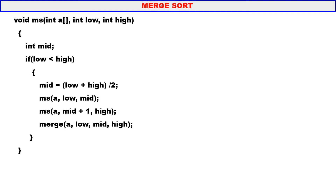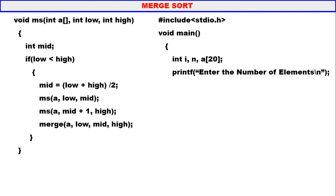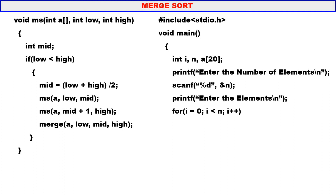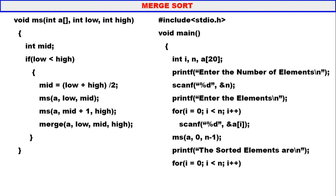We have discussed the merge procedure and the merge sort function. The main program is very simple: enter the number of elements, read n, read the elements into the array using a for loop. Then call the MS function from 0 to n-1 — when this function returns, the array is sorted. Then print the sorted elements using a for loop. If you know the merge procedure, sorting becomes very easy.